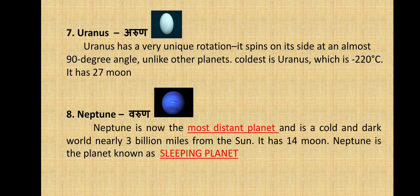Next you have Uranus, also known as Arun. Uranus has a very unique rotation — it spins on its side at an almost 90-degree angle unlike other planets. The coldest planet is Uranus, at minus 220 degrees Celsius, and it has 27 moons.